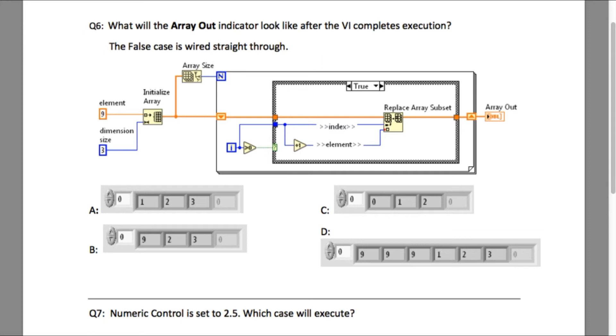Initially the initialized array will produce an array of three elements, each of them will have the value of 9. This means the for loop will execute only three times, which makes D an incorrect answer.